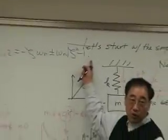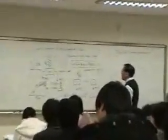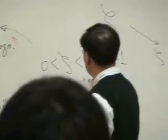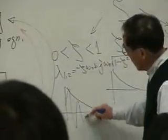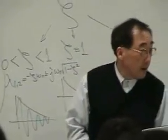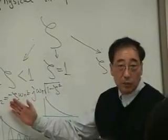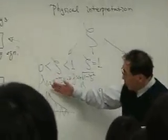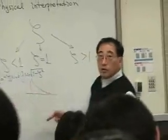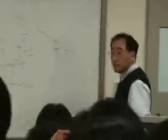And in this case, what happens? This one is smaller than 0. Therefore, we will have lambda 1, 2 equal to minus zeta omega n plus minus j omega n squared root of 1 minus zeta squared. So I have the motion that is exponentially decayed, but oscillating. The rate of decay depends on zeta. If I have a big zeta, then I have small oscillation. If I have a small zeta, then I have large oscillation.